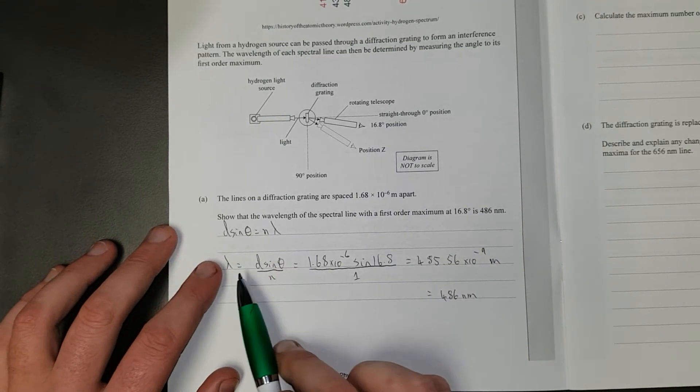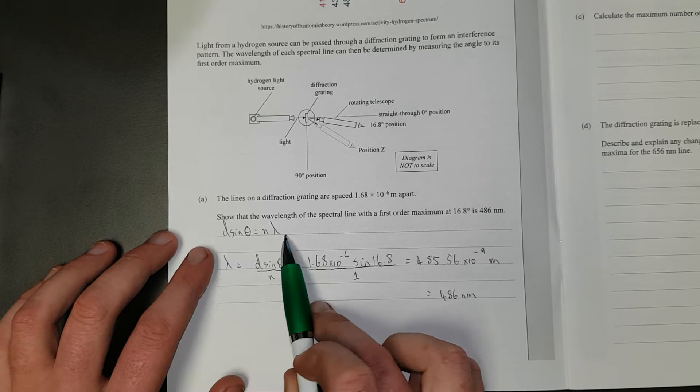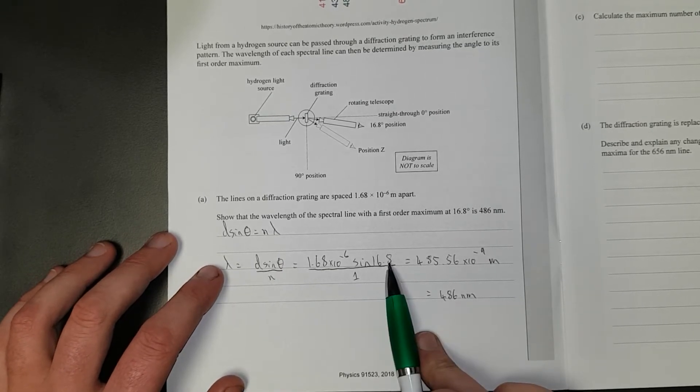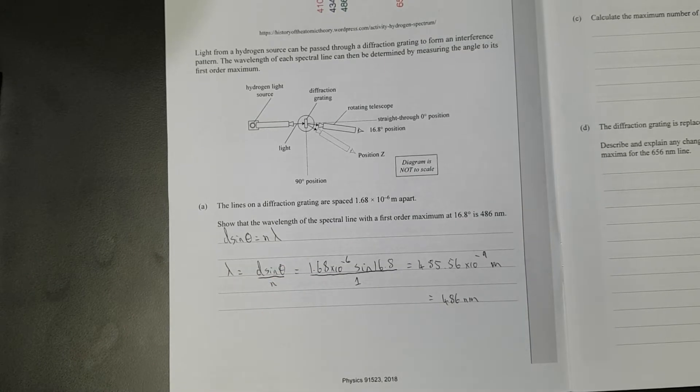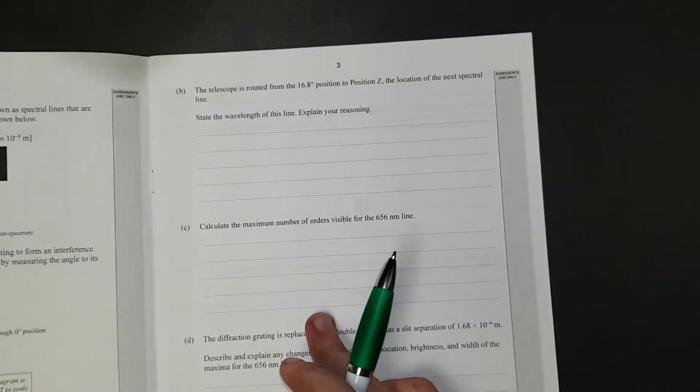You had to write the formula, then you had to rearrange, then you had to correctly substitute, and then you had to write the answer. If you didn't do this part, you didn't get achieved. Yeah, I know, because I marked the paper.